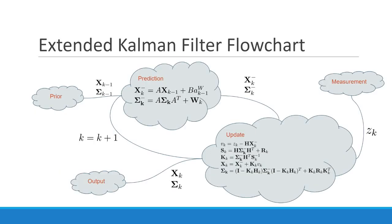Here is a quick flow of how the EKF algorithm works. Given a prior state xk-1 and covariance σk-1, we predict the state estimate and the covariance estimate. A GPS measurement zk, giving us position coordinates x and y, is used to correct the estimates, giving us an updated σk and xk. This procedure is then repeated by iterating through k.